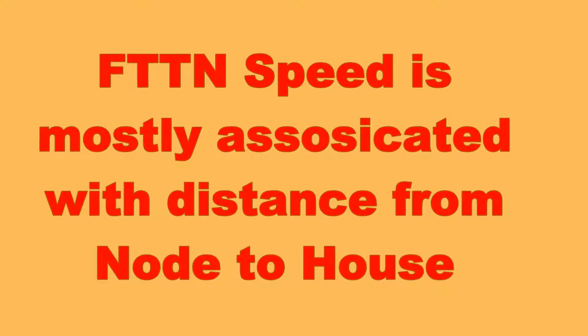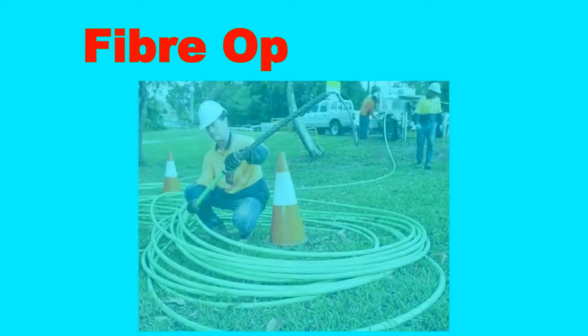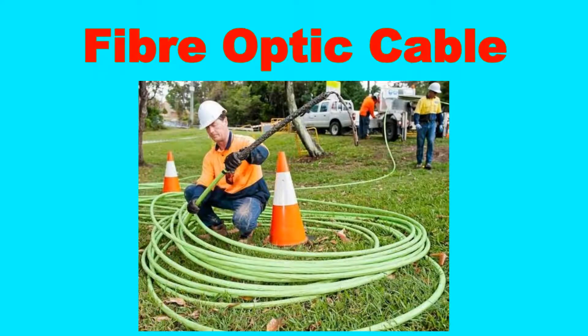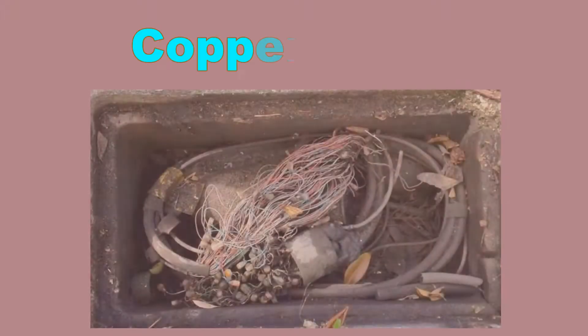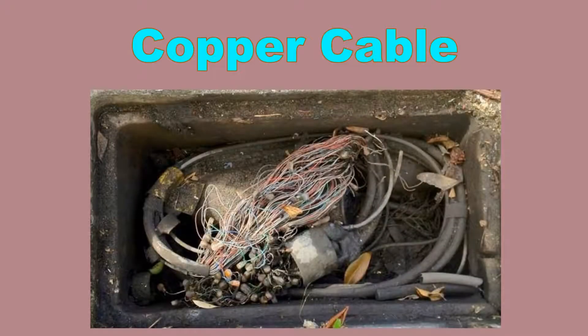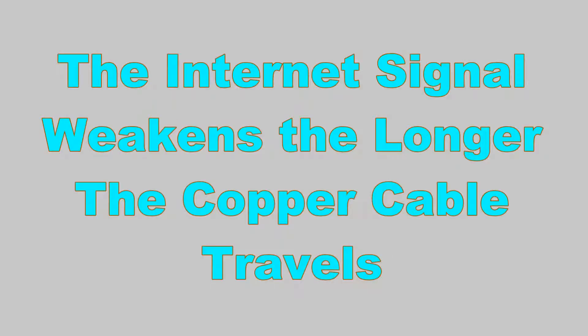With Fibre to the Node, the further away you are from the Node the slower your internet speed will get. The Node gets its internet connection via fibre cable that can send and receive information very fast. Unfortunately, from the Node to your house it uses copper wire, and the internet connection gets weaker the longer the copper wire from the Node is to your house.